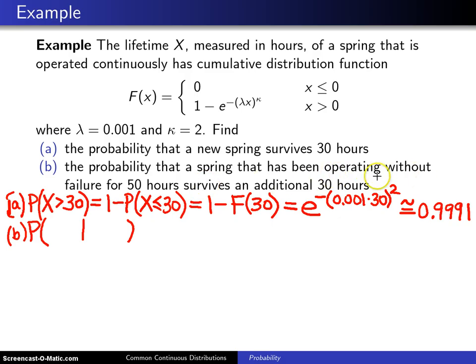On the given part, we know that it has been operating without failure for 50 hours, so we know its lifetime is something greater than 50 hours. So that's x greater than 50, and we want the probability that it survives an additional 30 hours, so that's going to be the probability that its lifetime is greater than 80, given it has made it 50 hours.